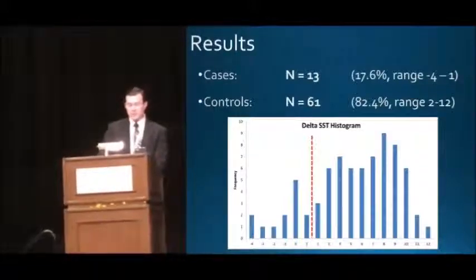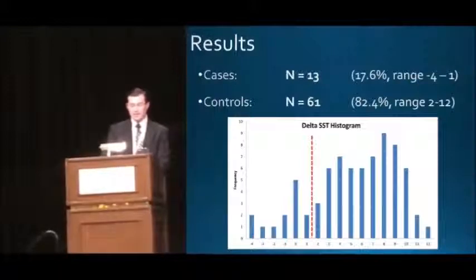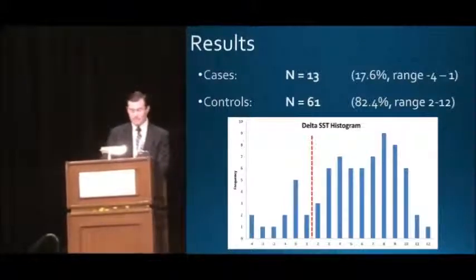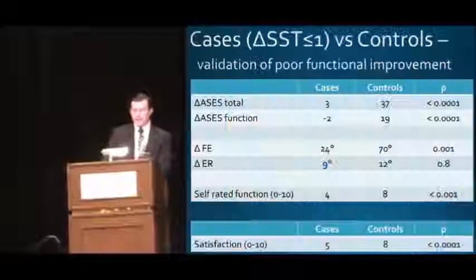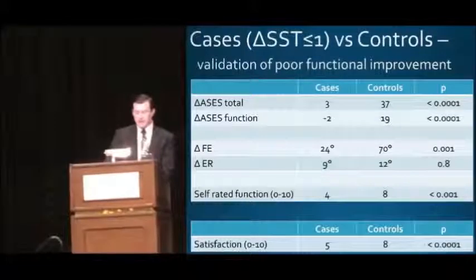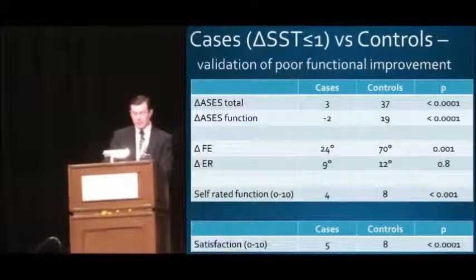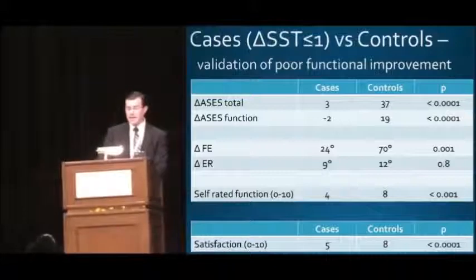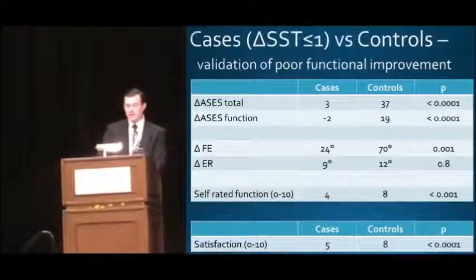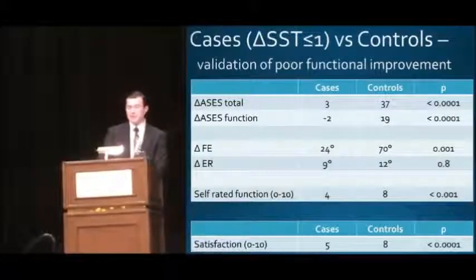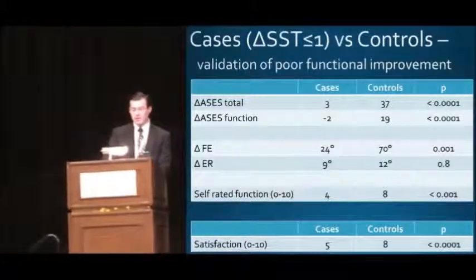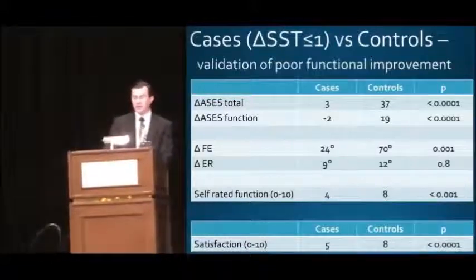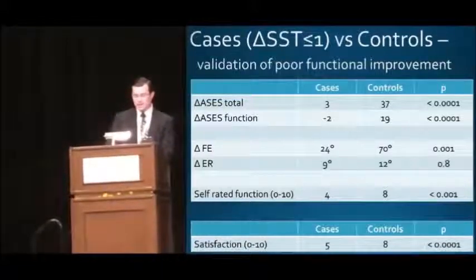Thirteen patients were identified as cases with poor functional improvement and 61 served as a control group. The histogram shows the change in SST score for cases on the left and controls on the right. Defining the case group by SST score truly selected a group of patients with poor functional improvement — the case patients also had inferior improvements in ASES scores, range of motion, final self-rated function, and they were less satisfied than the control patients.